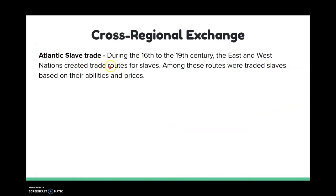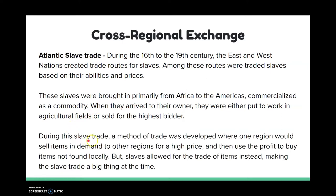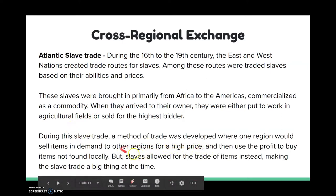The Atlantic slave trade was also another example. During the 16th to 19th century, the East and West nations — the Americas and all the European areas — created trade routes for slaves. Among these routes, slaves were traded based on their ability and prices. Some slaves in Africa and Europe had different abilities than those in America. That's why Americans used the African slaves because of their abilities — they didn't have any in America, so that's why they traded. They developed a trade method where they used slaves as currency, essentially trading items for slaves.